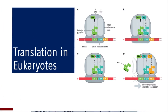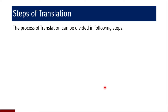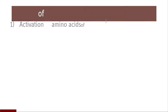Coming to translation in eukaryotes, we will first see what are the steps of translation. The process of translation can be divided into the following steps: activation of amino acids, initiation, elongation, and termination. So these four steps are there in the process of translation. Now let us go to the first step, that is activation of amino acids or formation of aminoacyl tRNA.